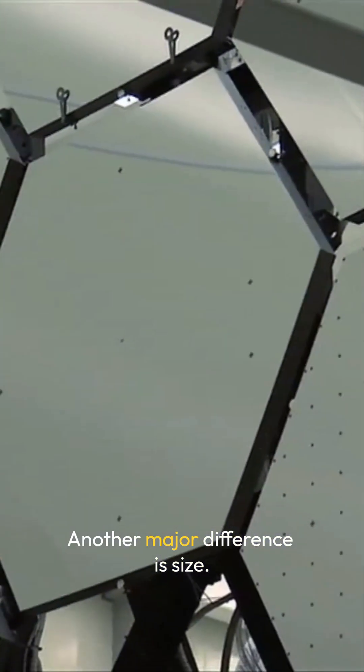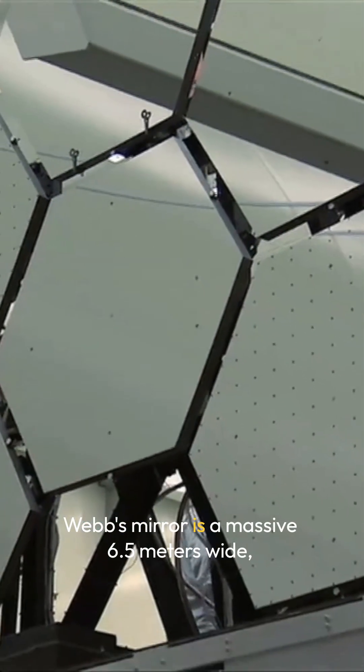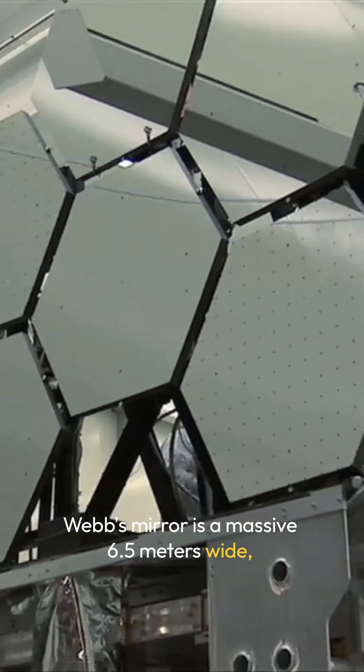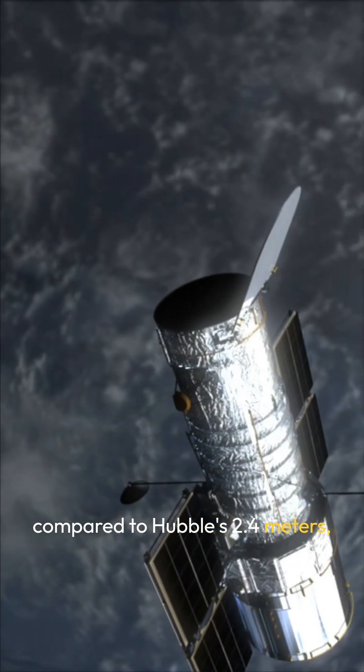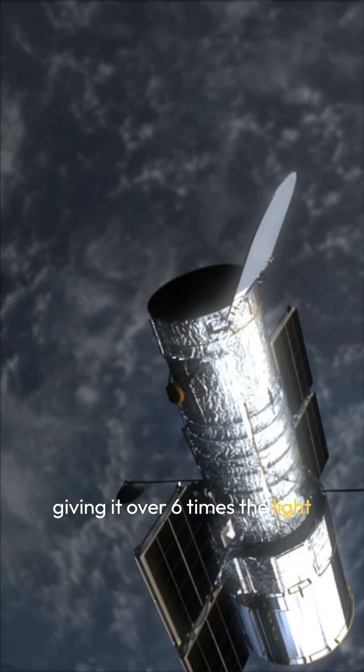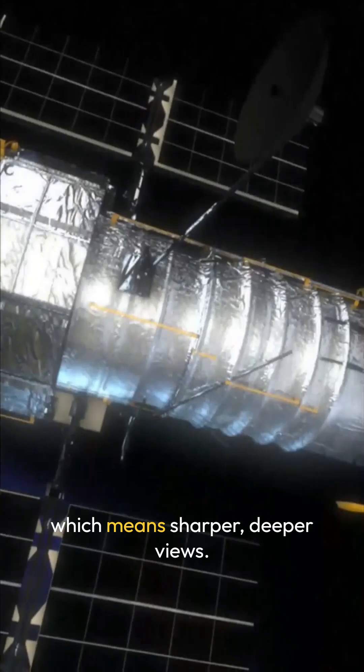Another major difference is size. Webb's mirror is a massive 6.5 meters wide, compared to Hubble's 2.4 meters, giving it over six times the light-gathering power, which means sharper, deeper views.